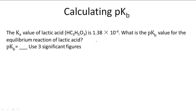Usually to calculate pKb we have to find Kb first. Since we don't have the reaction written out but we do have the Ka value, we can figure out what the Kb value is.